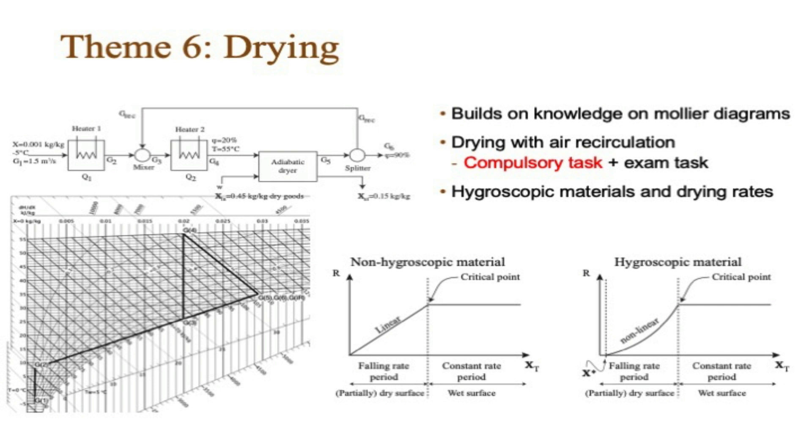In the sixth and last theme, drying, we focus on drying using adiabatic air dryers with partially recirculated air. We build heavily on the student's prior knowledge on how to use Mollier diagrams for moist air. Students should also be able to explain how hygroscopic materials work and how that influences the drying rate during the drying process. The compulsory task in this theme is an example of what an exam task could look like.